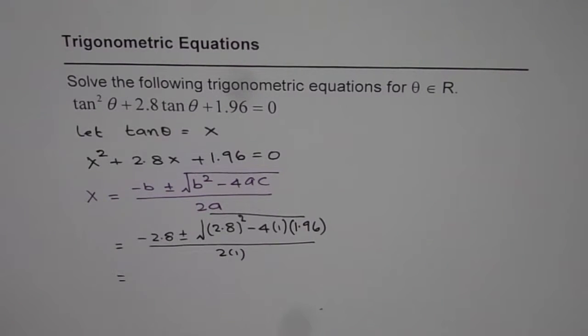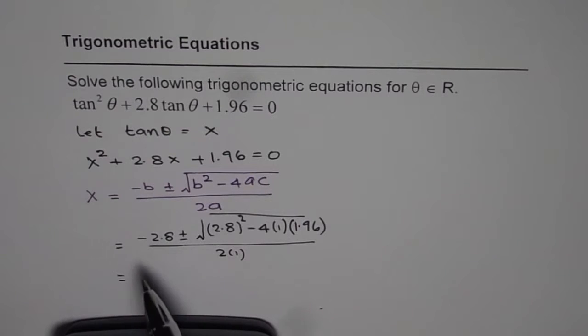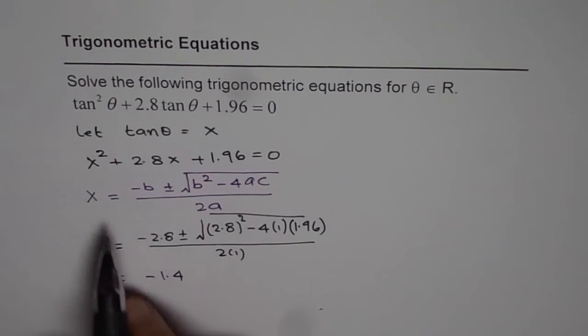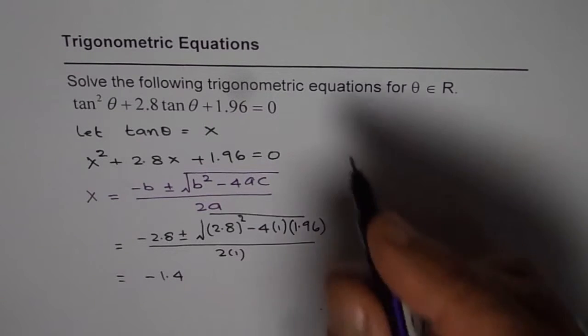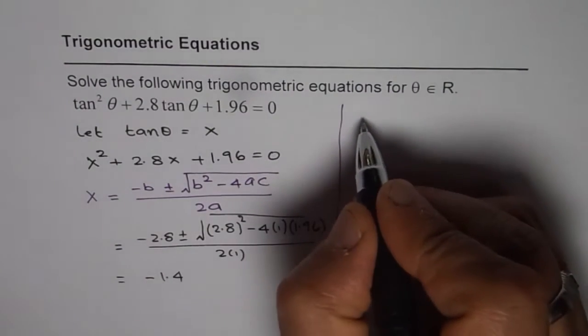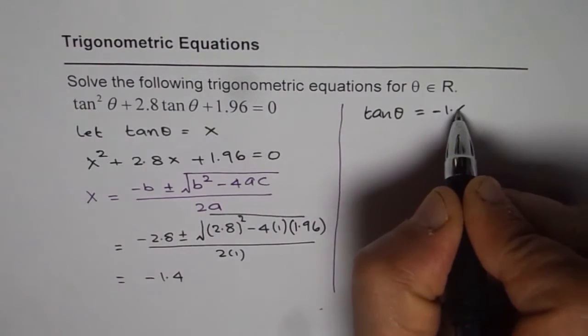Now we can use the calculator and calculate the answer. So let's find out what the square root term is. So it is 2.8 squared minus 4 times 1.96 which is equal to 0. So within the square root we have 0. So we have minus 2.8 divided by 2 which gives us minus 1.4. So that is the answer which we get for x. Now what is x? As you know we substitute tan theta as x so we get tan theta equals to minus 1.4.